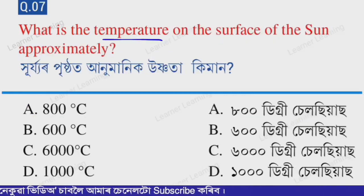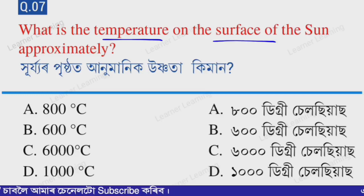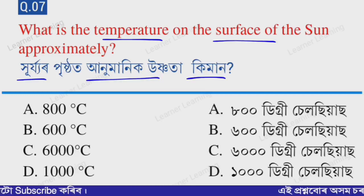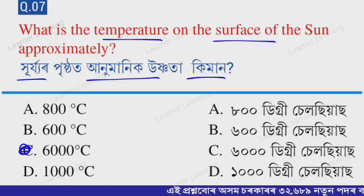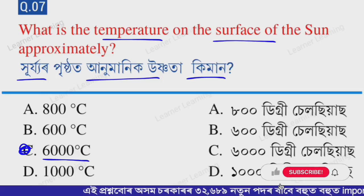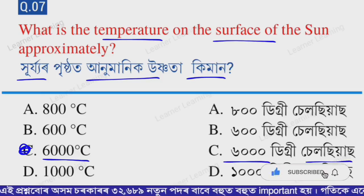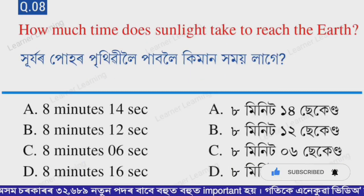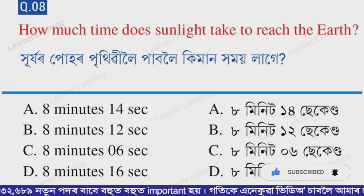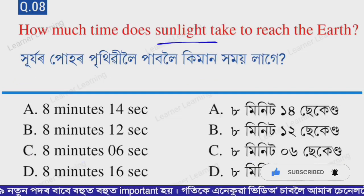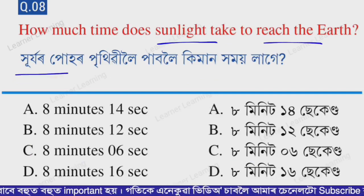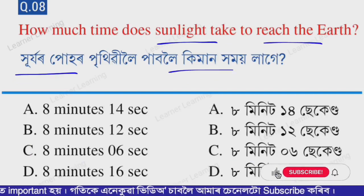Next question: What is the temperature on the surface of the sun approximately? Select from the options. Option C — six thousand degrees Celsius.